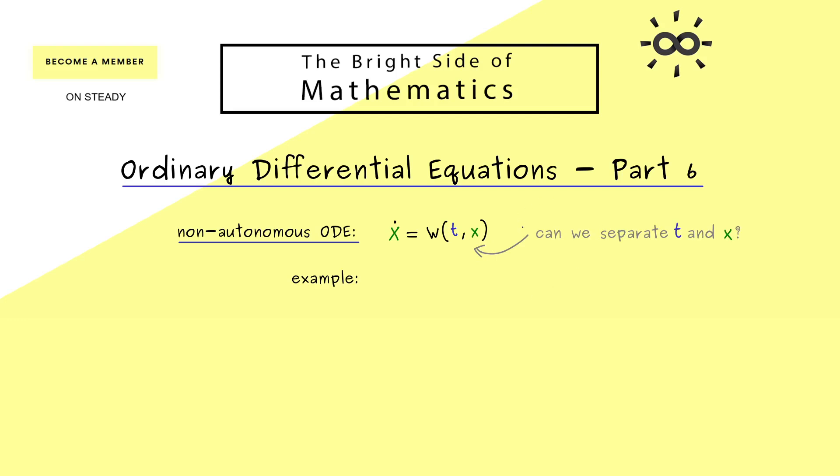The question for this method is can we separate both variables on the right-hand side. Let's say we have x dot equals t cubed times the function x squared. Then in this case we have this separation of variables because we have a product where in one factor there are only t's and in the other factor there are only x's. Of course this is not always possible but if it is we can solve this one-dimensional ODE, and the method we have for that we simply call separation of variables.